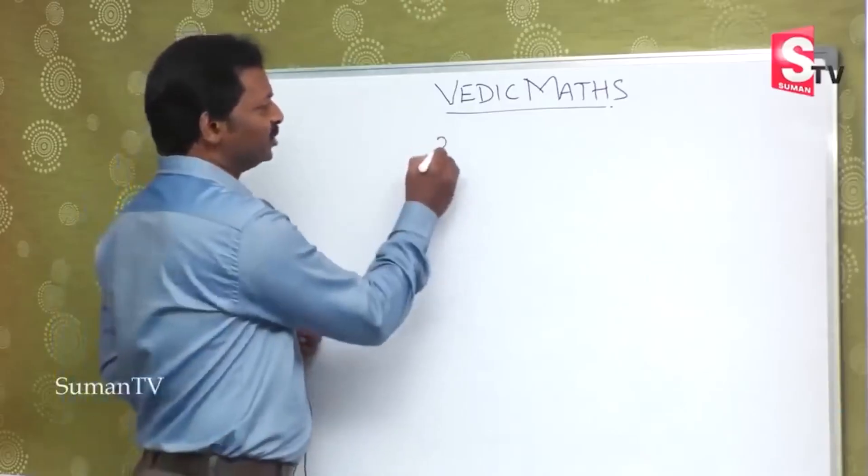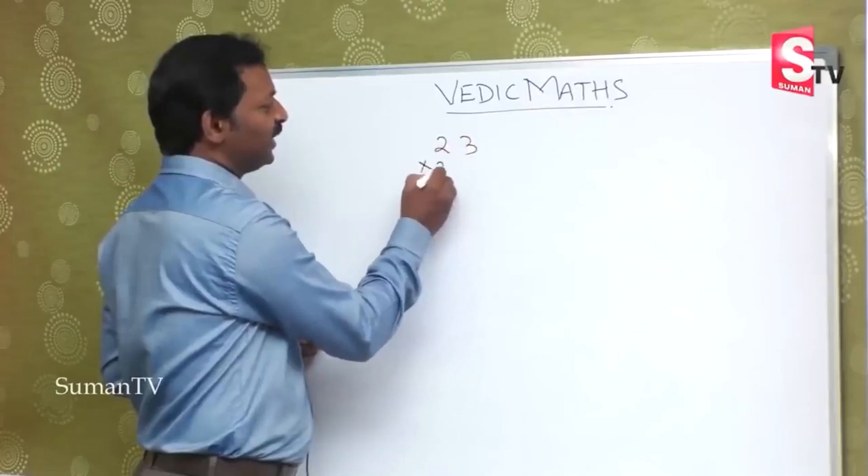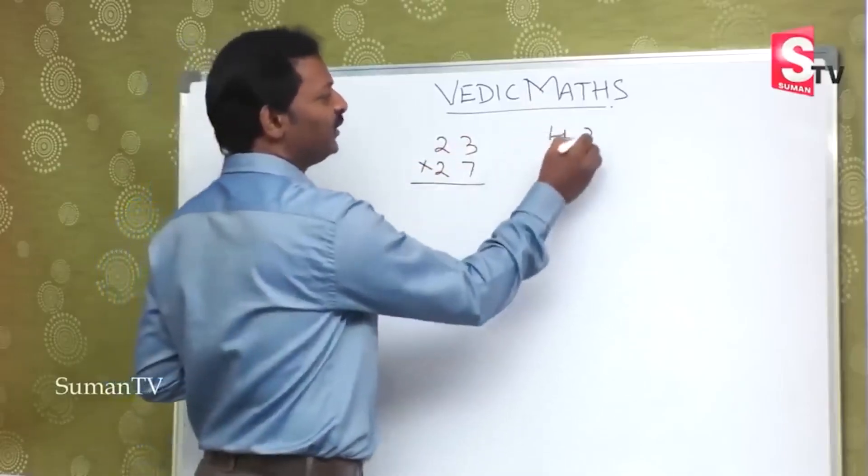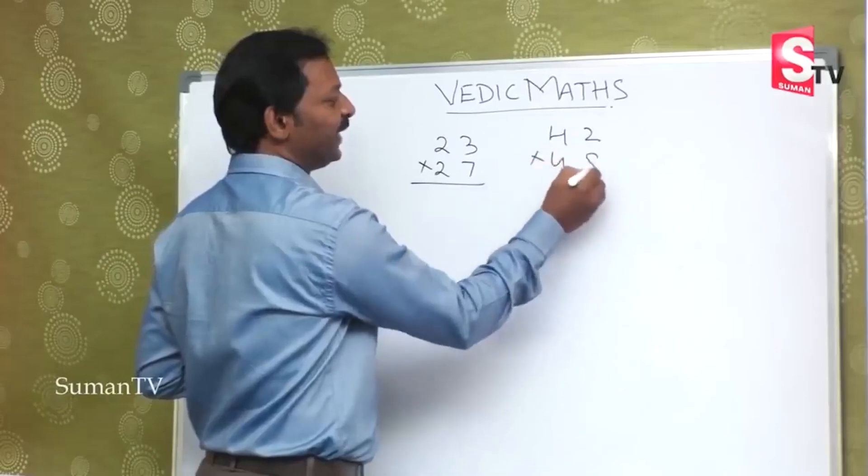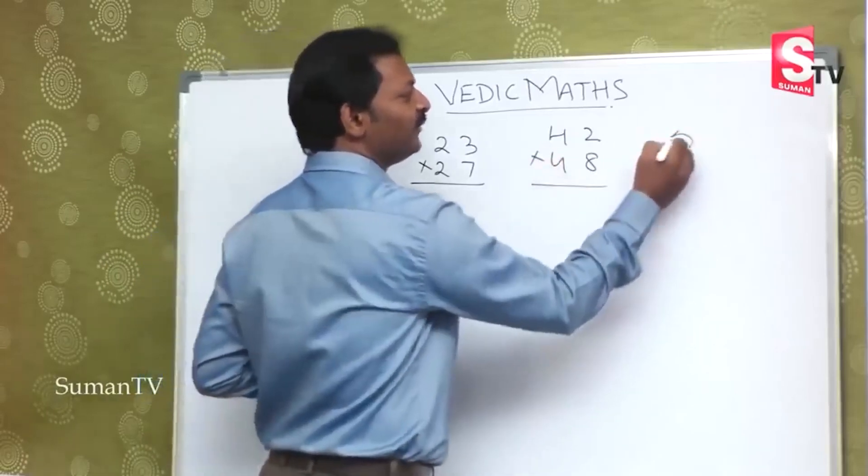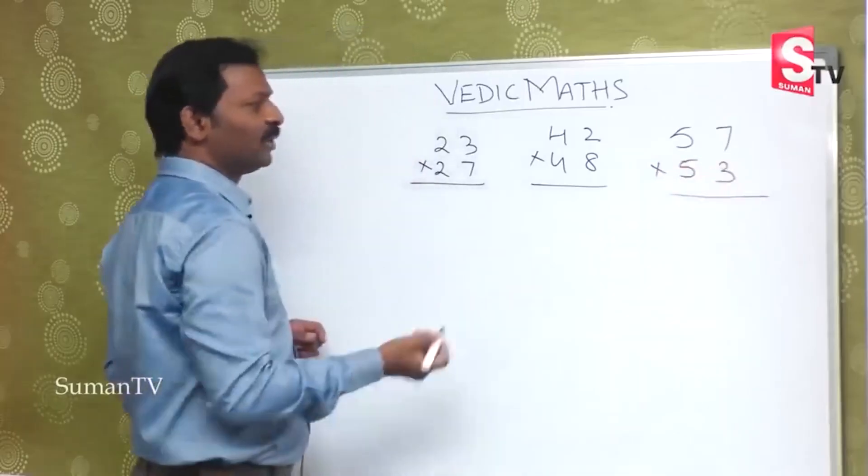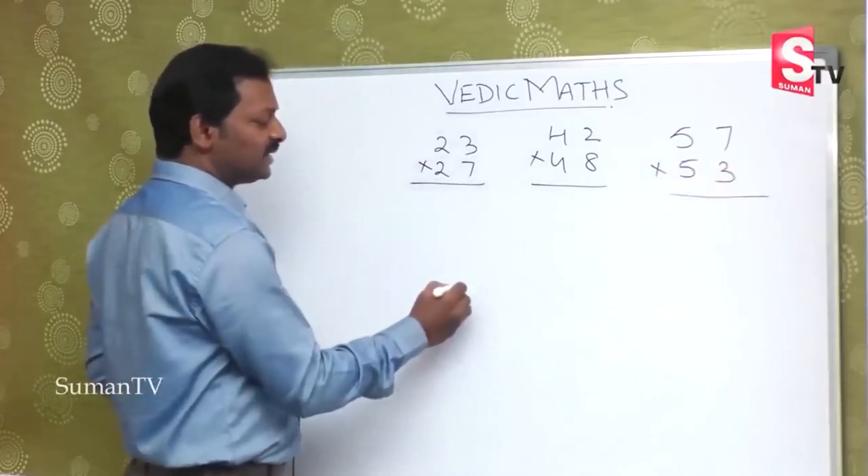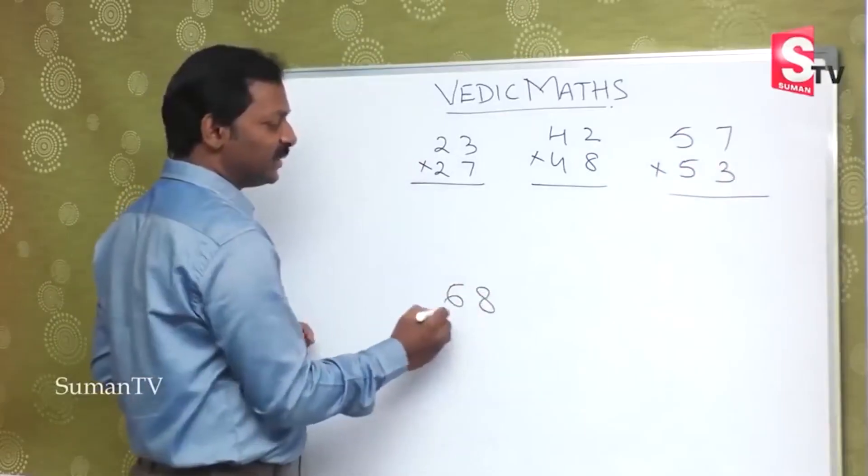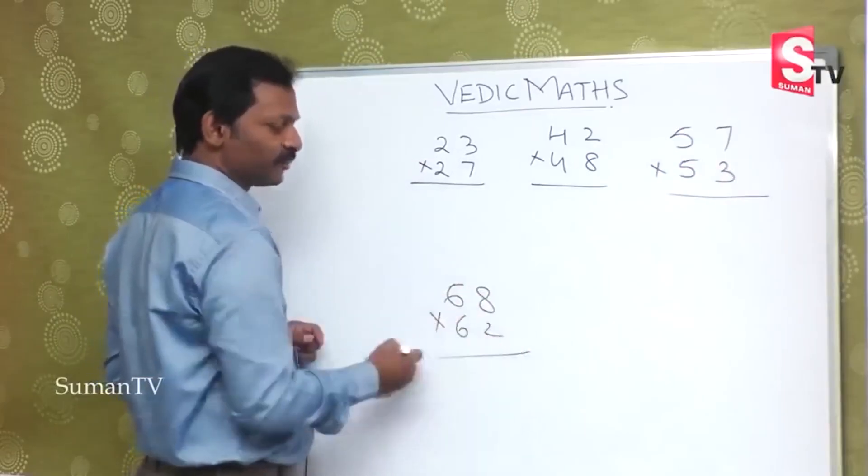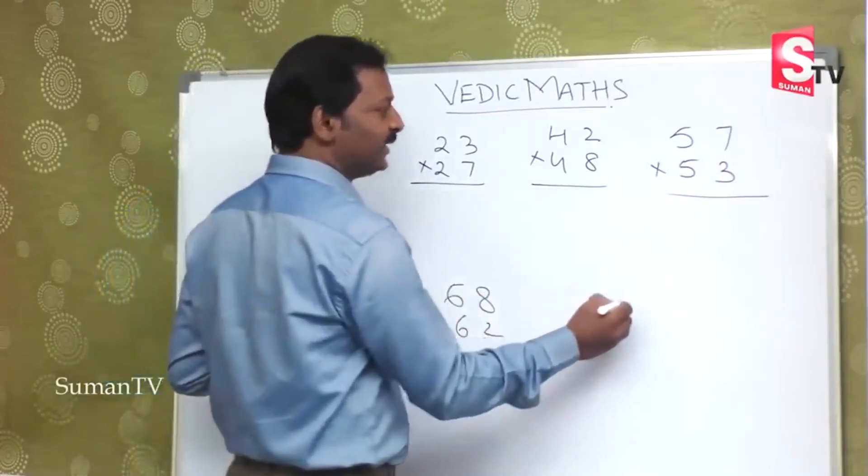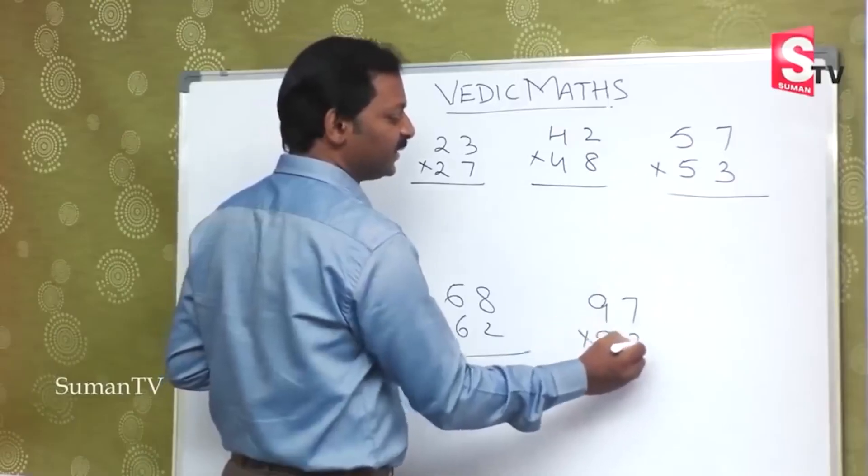Suppose I have a number. 23 is multiplied by 27, or 42 is multiplied by 48, 57 is multiplied by 53, 68 is multiplied by 62, 97 is multiplied by 93.